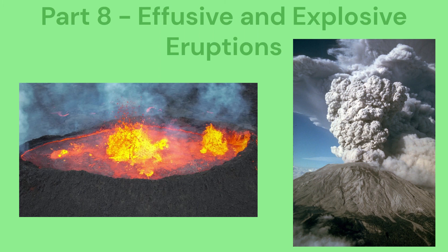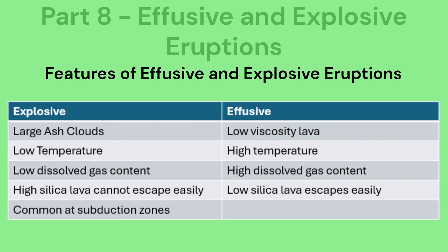The last part of this video covers the features of effusive and explosive volcanic eruptions. Explosive eruptions produce huge amounts of material which has a major impact — these are the types of eruption that produce huge clouds and can cause international problems, for example disrupting air travel. Effusive eruptions result in the outpouring of lava onto the ground because it is low viscosity.